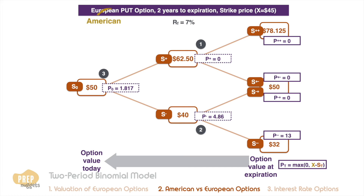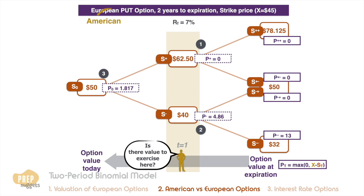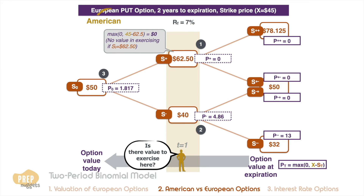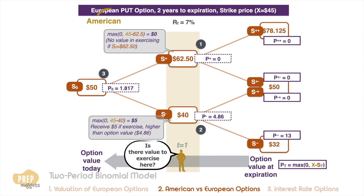To illustrate: if this is an American put option, it can be exercised even at t=1. If the option holder exercises when the spot price is 62.50, he receives nothing — obviously not a good point to exercise. However, if the spot price is 40, he receives five dollars, which is higher than the value of the option at that node. Therefore, we value the American option at this node as five dollars instead of 4.86. Making calculations based on this value of five dollars, we get 1.869 as the value of the American put option, which is slightly higher than the European option.